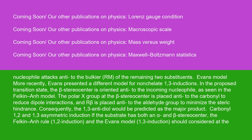Evans' model: more recently, Evans presented a different model for non-chelate 1,3-inductions. In the proposed transition state, the beta-stereocenter is oriented anti to the incoming nucleophile, as seen in the Felkin-Anh model. The polar X group at the beta-stereocenter is placed anti to the carbonyl to reduce dipole interactions, and R-beta is placed anti to the aldehyde group to minimize steric hindrance. Consequently, the 1,3-anti diol would be predicted as the major product.